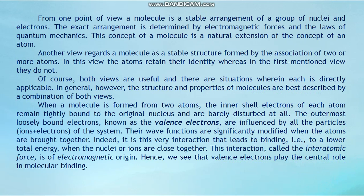When a molecule is formed from two atoms, the inner electrons of each atom remain tightly bound to the original nucleus and are barely redistributed at all. The outermost loosely bound electrons, known as the valence electrons, are influenced by all the particles — ions plus electrons — of the system. Their wave functions are significantly modified when the atoms are brought together. This interaction leads to binding, to a lower total energy when the nuclei are close together. This interaction, called the interatomic force, is of electromagnetic origin. Hence the valence electrons play the central role in molecular binding.